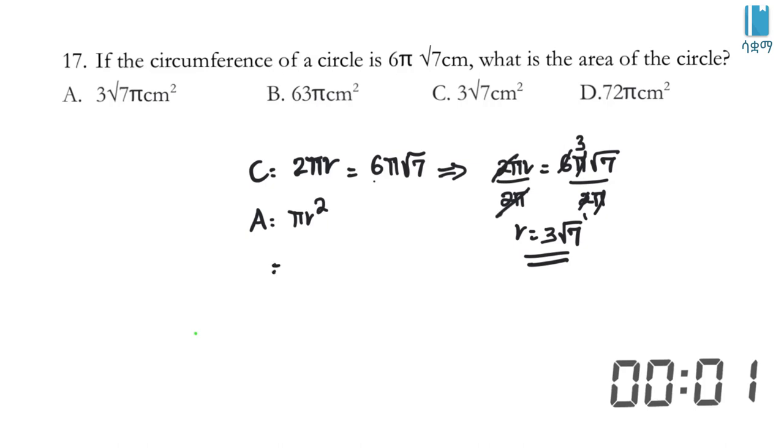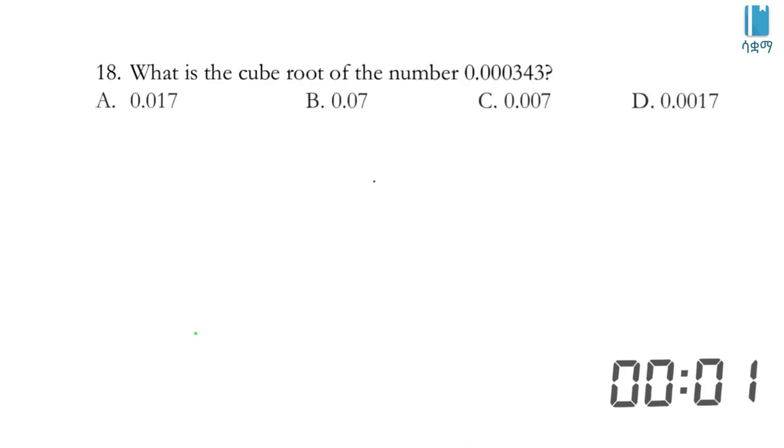Now we calculate the area. Area equals πr². With r = 3√7, we have π times (3√7)², which is π times 9 times 7, equals 63π centimeter square. The answer is B, 63π centimeter square.